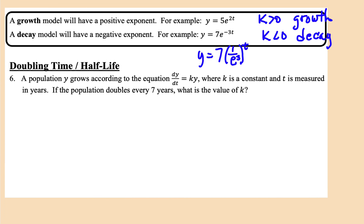To summarize: the growth model is y = C e^(kt) where C is the initial amount. When k is greater than zero, it's growth. When k is negative, it's decay — because the negative exponent puts e in the denominator, and multiplying by a value between 0 and 1 makes the quantity get smaller and smaller.